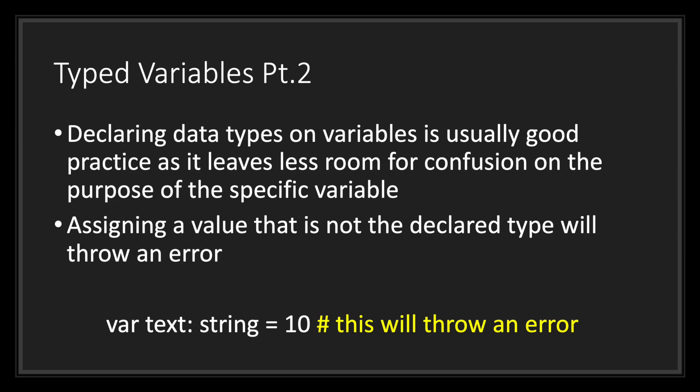Assigning a value that is not the declared type will throw an error. Let's go ahead and take a look at this example. We have a variable text with the data type string and we are trying to assign it the integer literal value 10. In GDScript if we were to do this, this will throw an error.